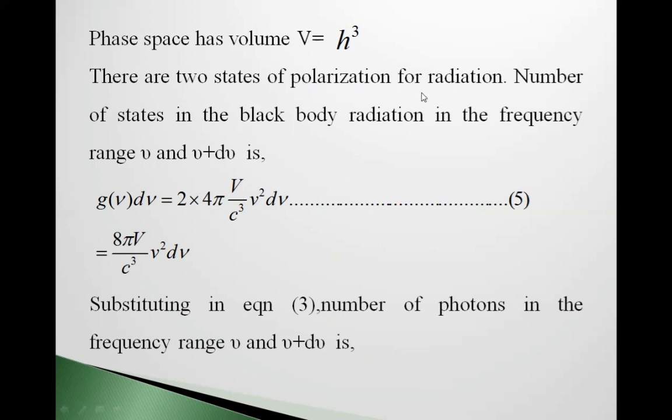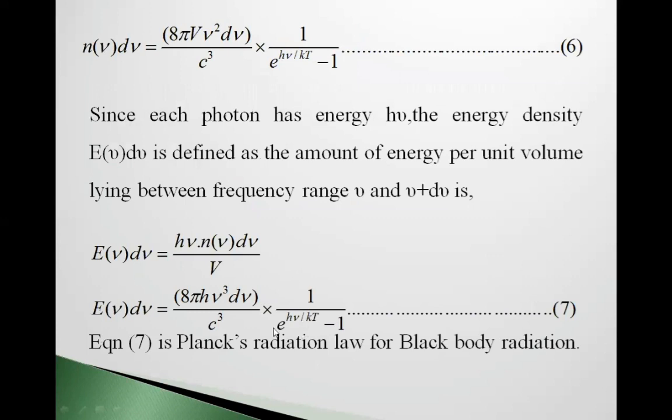Phase space has volume V equals h cubed, where h is Planck's constant. There are two states of polarization for radiation. Number of states in black body radiation in frequency range nu and nu plus d nu is g(nu)d(nu) equals 2 times 4 pi V upon c cubed times nu squared d nu. This V is at the place of h cubed, equation 5. So equals 8 pi V upon c cubed times nu squared d nu. Substituting equation 3, number of photons in the frequency range nu and nu plus d nu is n(nu)d(nu) equals 8 pi V nu squared d nu upon c cubed times 1 upon e raised to h nu upon kt minus 1, equation 6.